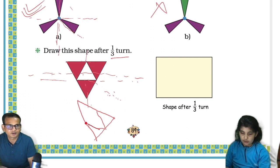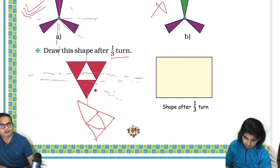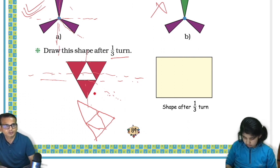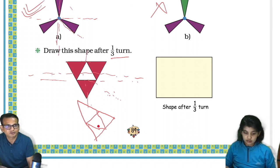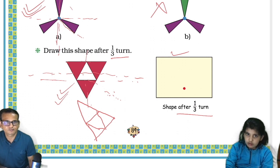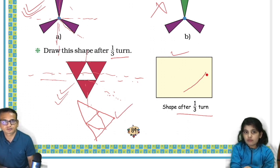Let me do it my own way and I will see whether I'm correct or wrong. It will be same, Avisha. Does the shape... draw the shape — it will be same only. It will be same after one-third turn. Draw the shape after one-third turn — yes, it will be the same. I drew it here so you can draw here.